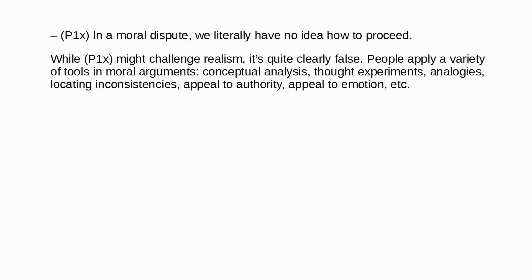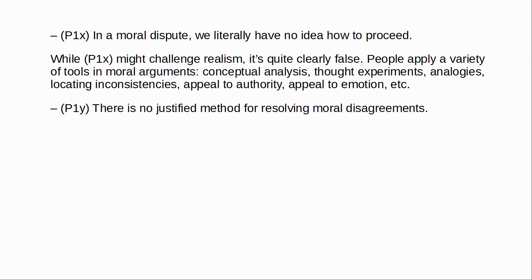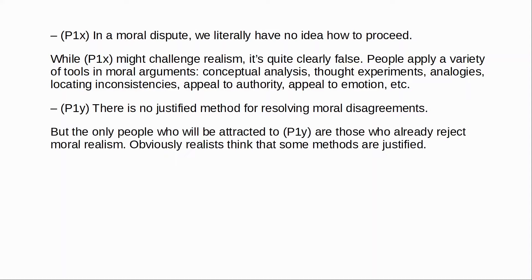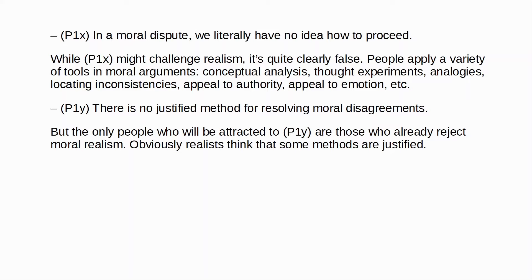Second, we might take premise one to mean that there is no justified method for resolving moral disputes. Yes, there are plenty of ways we can go about trying to persuade other people — we can offer reasons in favour of our own views — but there's no reason to think that any of these methods are reliable, that any of them provide good access to the facts. There are two fairly obvious problems with premise one on this interpretation. The first is that the only people who are going to be attracted to this claim are those who already reject moral realism, because obviously if you're a moral realist you will think that there are justified methods for resolving moral disputes. So the anti-realist will need to give some further argument for thinking that there are no justified methods — but then notice that it will be this argument, not the appeal to disagreement, that is doing the real work in challenging realism.